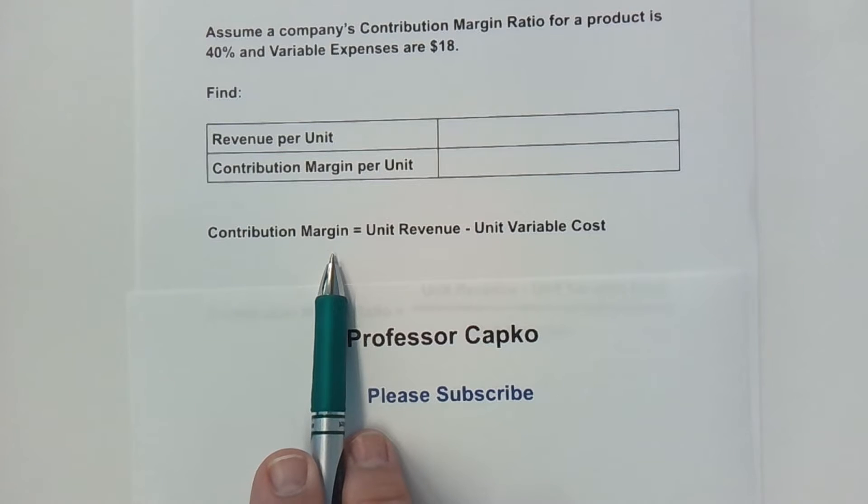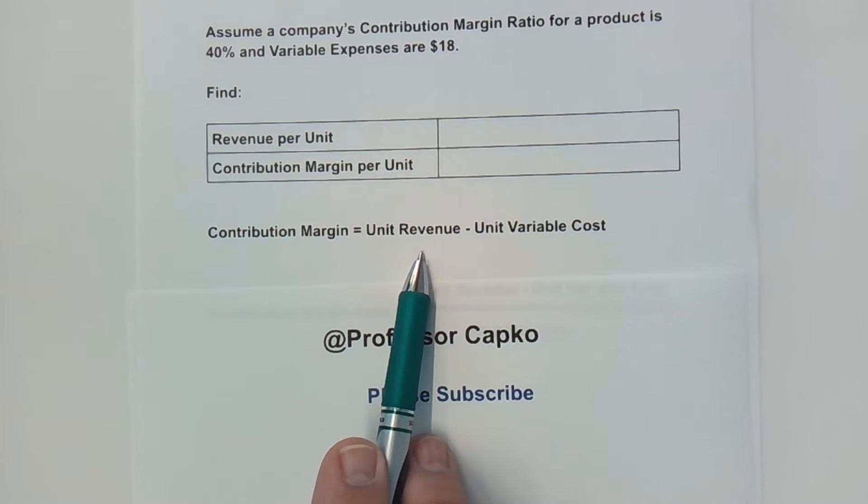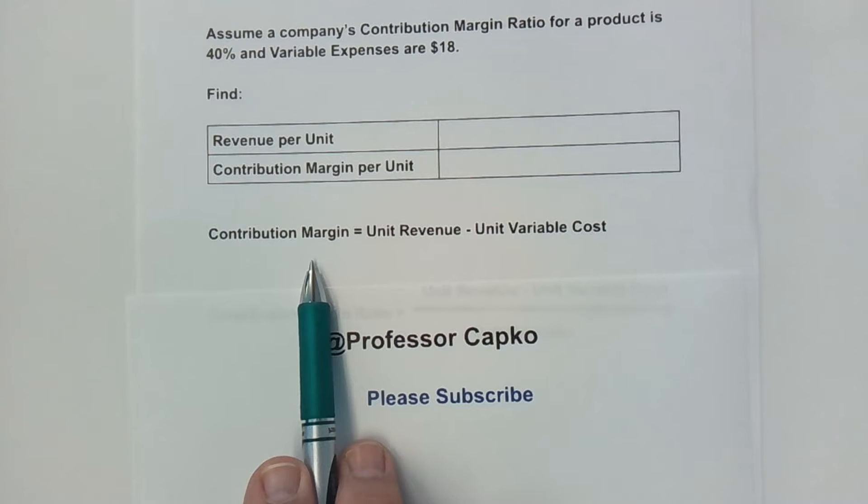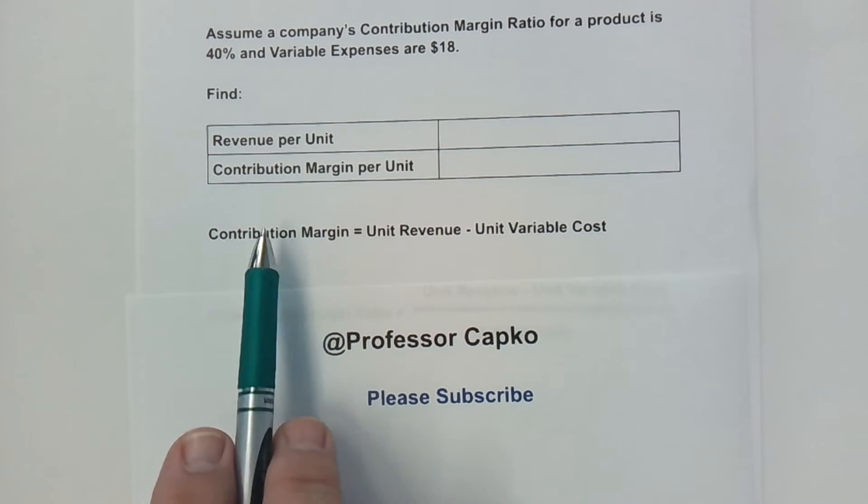So if something costs $100 per unit, and the variable costs were $25 per unit, the contribution margin would be $75 per unit. That's just for a dollar figure.